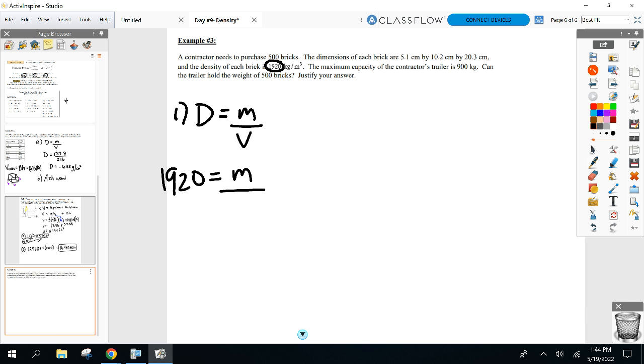Brick: 5.1 by 10.2 by 20.3. How can I find the volume of a brick? I hate to break it to you, but you're not doing it correctly. Most of your classmates are just multiplying those three numbers. Serena asked, can you convert it afterwards instead of doing it now? No, and I'll tell you why in a second. Look at the density. The density is kilograms per meter cubed, but that brick's in what? Centimeters. Can't happen. It's got to be the same dimensions as the density.